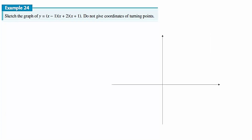Let's do this first example. How many x-axis intercepts do you expect? Three — because you've got three brackets. Where should those x-axis intercepts be? Let y equal zero — you've got x minus one, x plus two, x plus one. This tells me x equals one, x equals negative two, and x equals negative one. So you've got intercepts at negative two, negative one, and one.